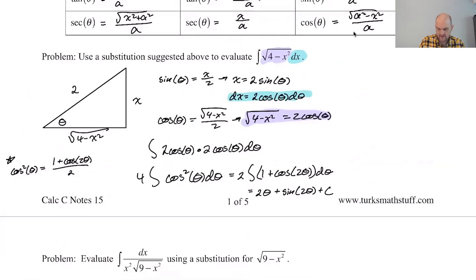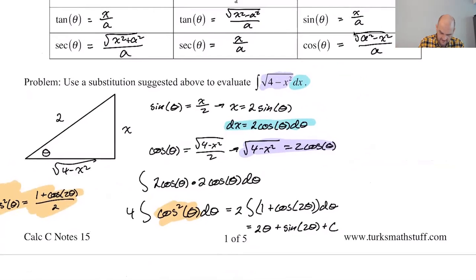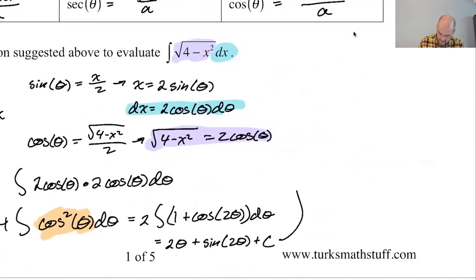But are we done? We're not done. The reason that we're not done, I wanted to highlight this, the reason we're not done is that the original problem didn't have thetas in it. It had x's in it. So now we got to go back. So how are we going to do that? Well, I know that the sine of theta is x over two, which means that theta is the inverse sine of x over two. So I'm going to say that this can become two times the inverse sine of x over two.